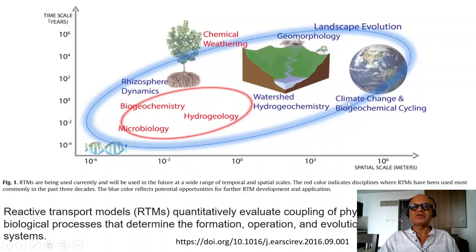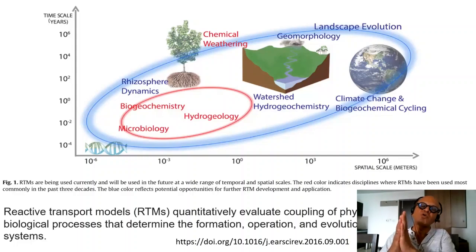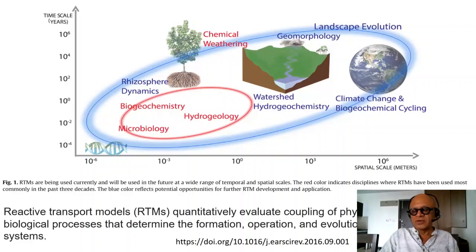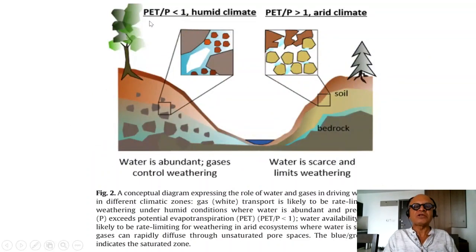Climate change and biogeochemical cycling is where we are headed in terms of the broad theme — we want to understand the weathering processes, carbon cycle evolution, and climate regulation to see how we are altering this and how we can navigate the future. Here we are looking at potential evapotranspiration divided by precipitation, and whether it is less than or greater than one depends on what climate you have.